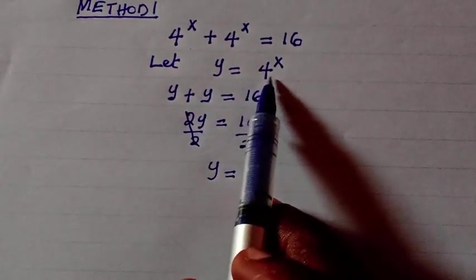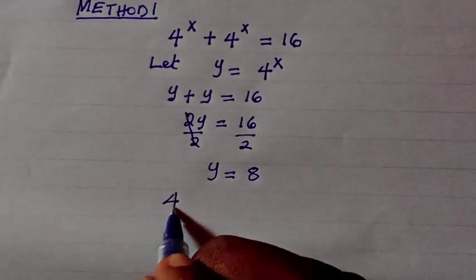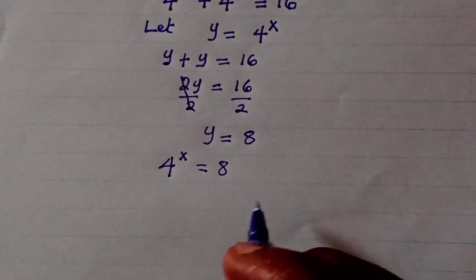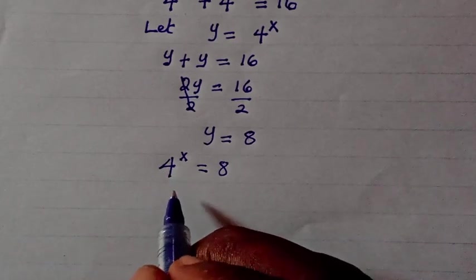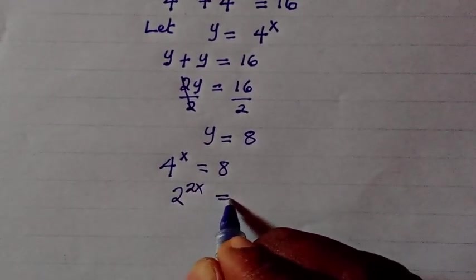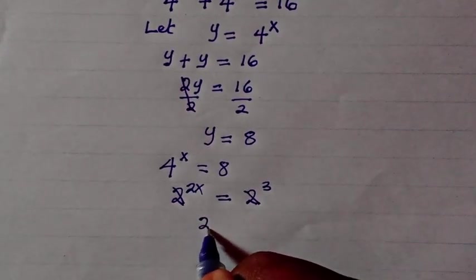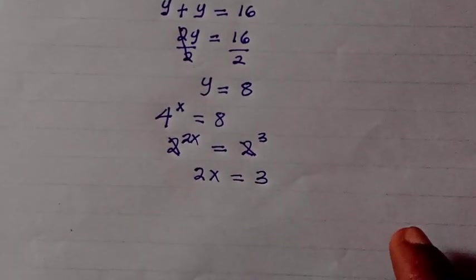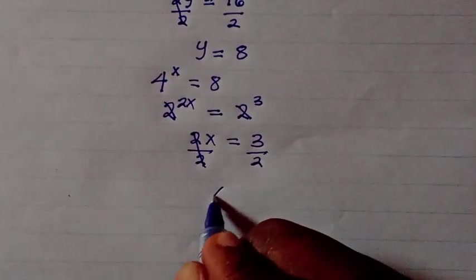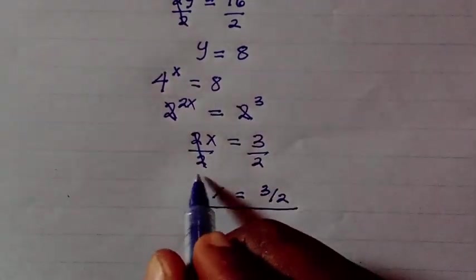We get y equals 8. Now recalling that y equals 4 to the power of x, therefore we have 4 to the power of x equals 8. So let's express 4 as a base of 2 and 8 as a base of 2. We have 2 to the power of 2, to the power of x, equals 2 to the power of 3. Cancelling gives us 2x equals 3, so dividing by 2, x equals 3 over 2.